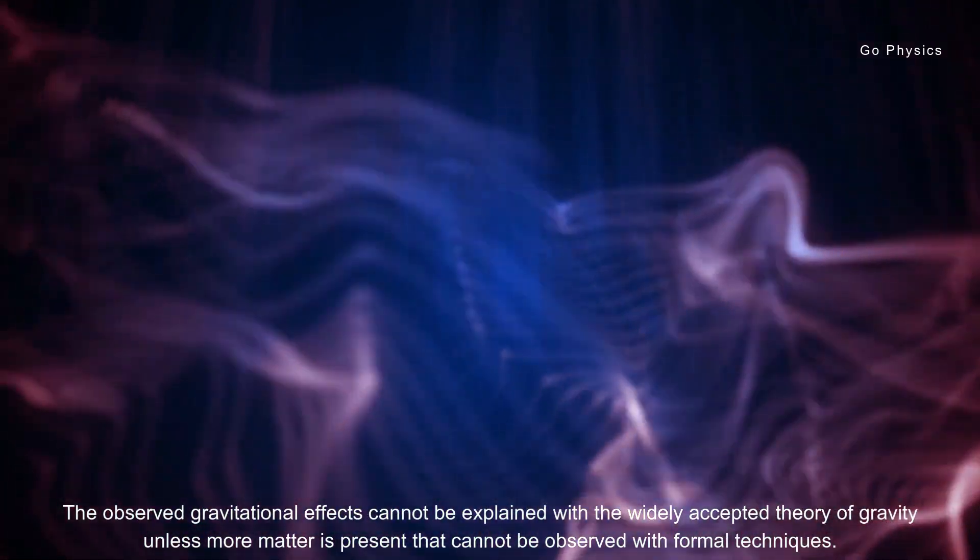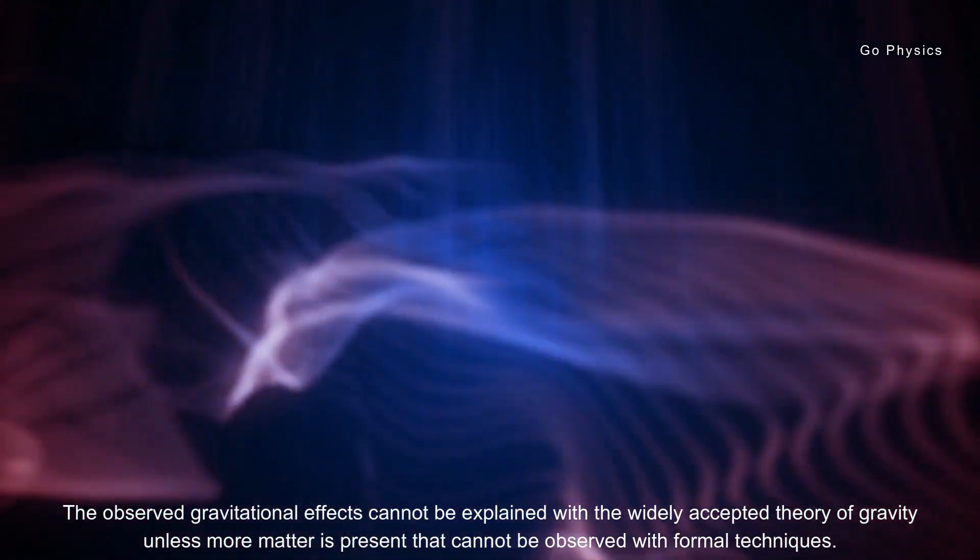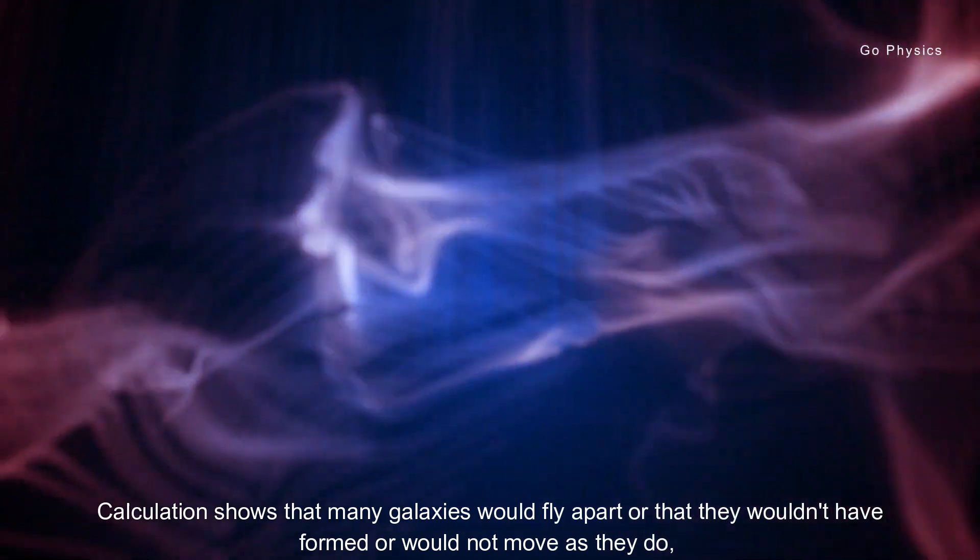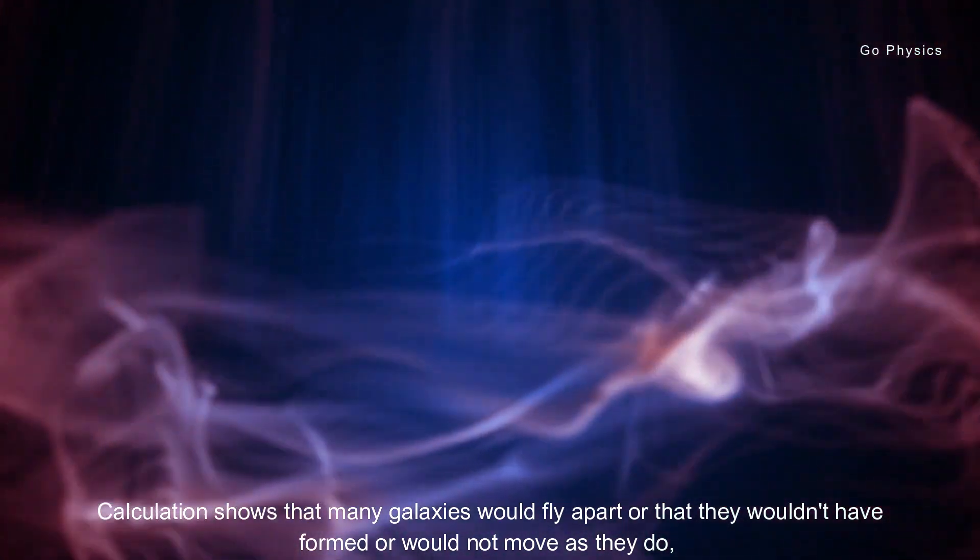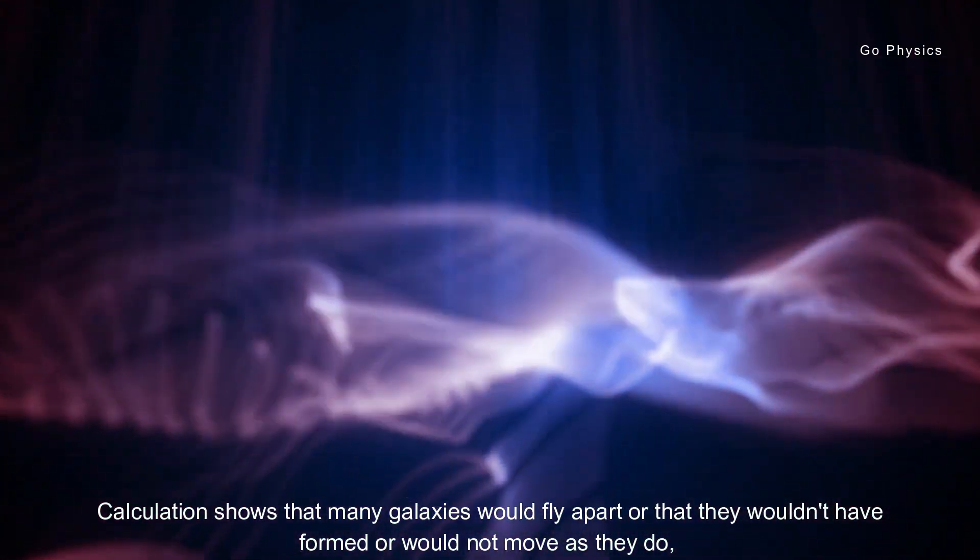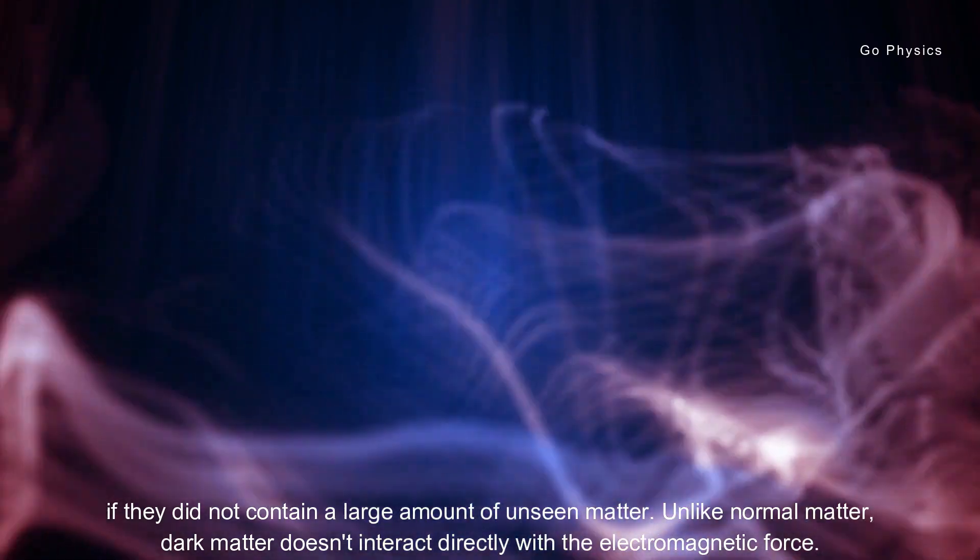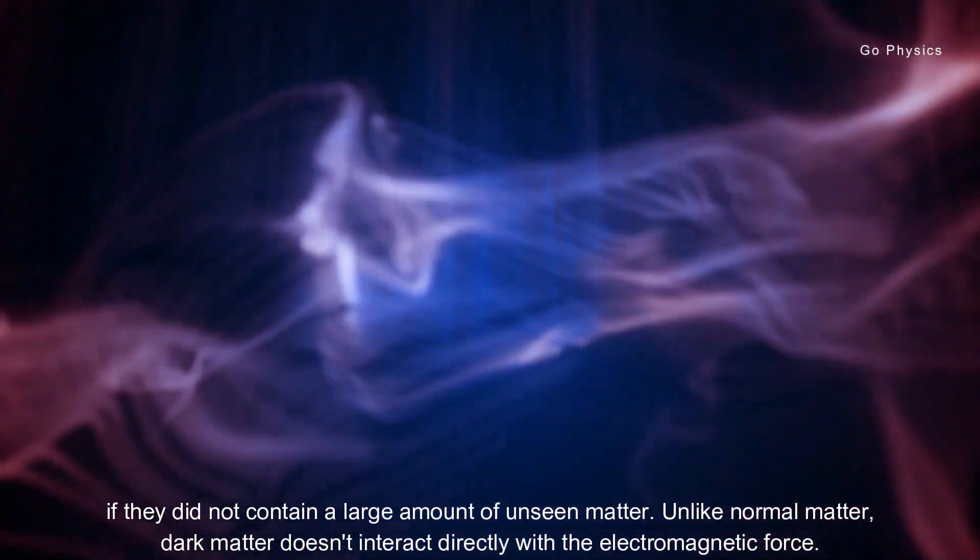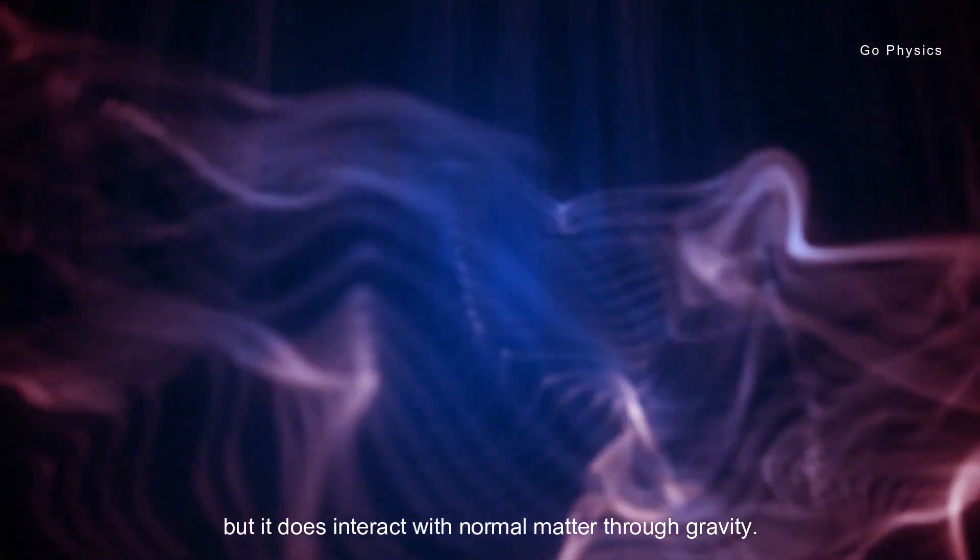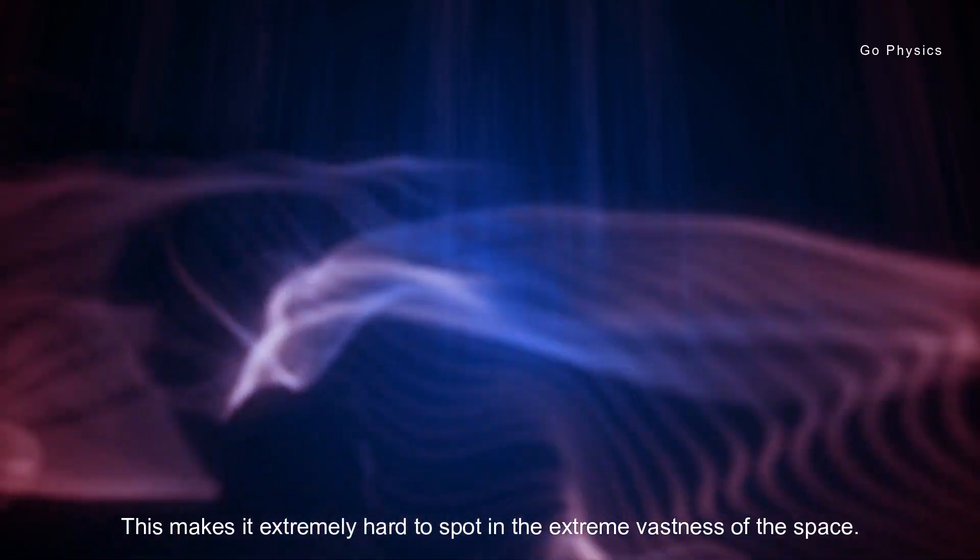The observed gravitational effects cannot be explained with the widely accepted theory of gravity unless more matter is present that cannot be observed with formal techniques. Calculations show that many galaxies would fly apart or that they wouldn't have formed or would not move as they do if they did not contain a large amount of unseen matter. Unlike normal matter, dark matter doesn't interact directly with the electromagnetic force, but it does interact with normal matter through gravity. This makes it extremely hard to spot in the extreme vastness of space.